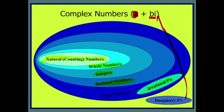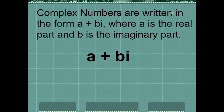Iske saath iota hota hai. Iota is basically the square root of minus one. Ishi liye negative number ka square root nahi hota — mathematically possible nahi hain aise calculate karna. So we term it as iota, or sometimes j as well. Complex numbers are written in the form a plus b·iota, where a is the real part and b is the imaginary part. For example, 2 plus 3·iota.